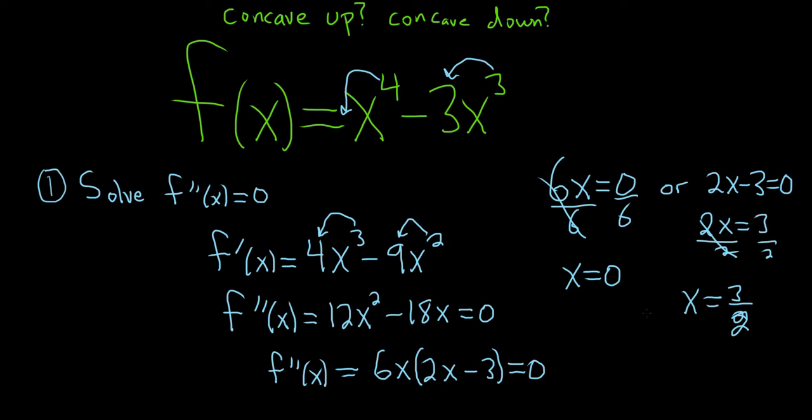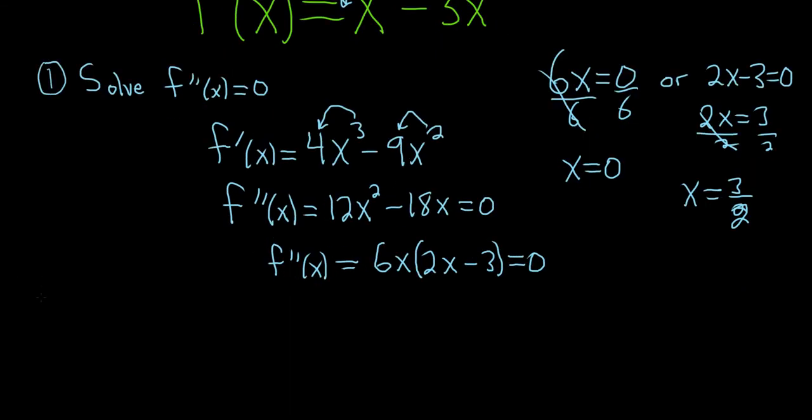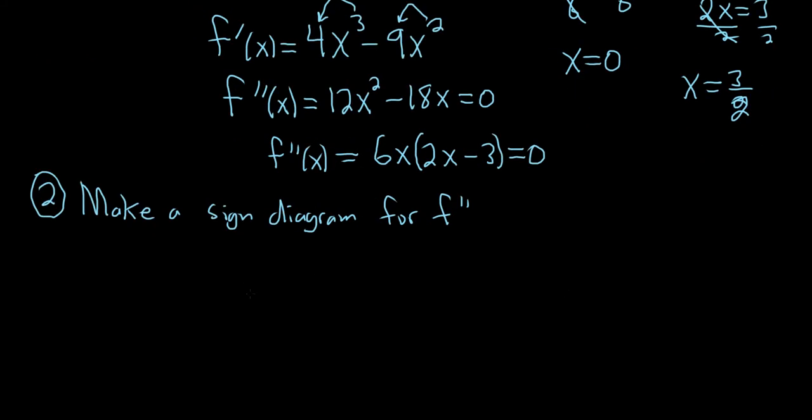The second step is to take these numbers and put them on a number line. So step two, we're going to make what's called a sign diagram. Make a sign diagram for f double prime. So we draw a little number line and we plot our answers from step one. So 0 and 3 halves. And again, if there's any domain issues we plot those as well. Now I keep saying that, but there's no example here where there's domain issues.